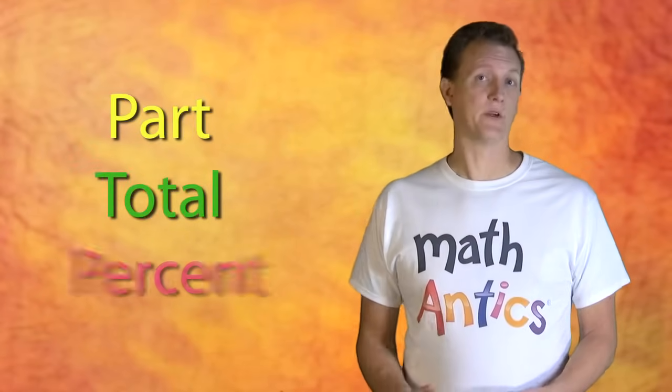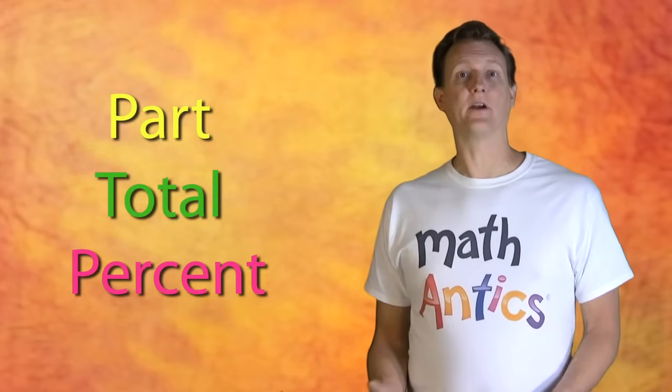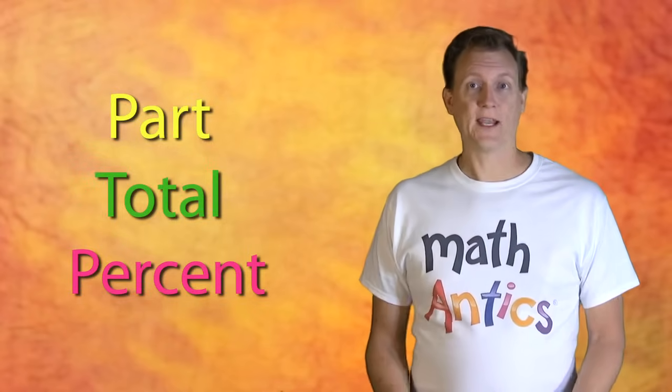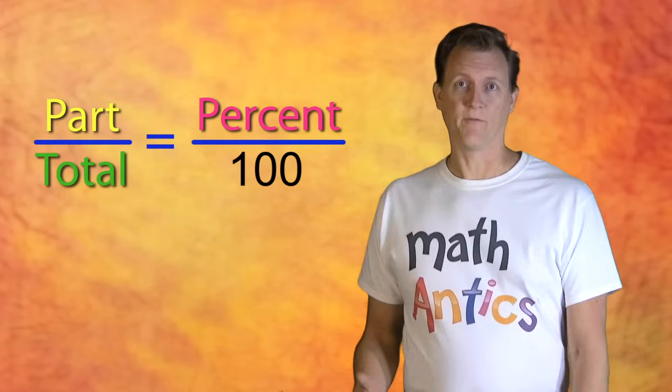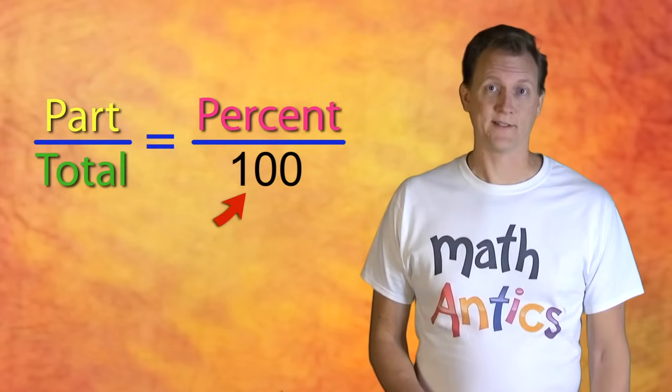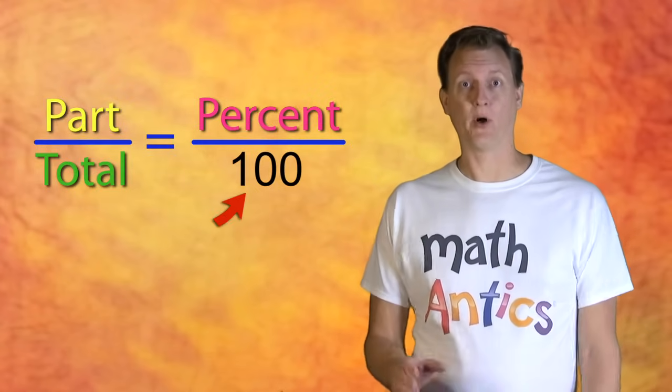In our last lesson about percents, we learned that there are three main types of percent problems because there's three different numbers that could be missing. Those three numbers are the part, the total, and the percent. They're just the three variables in the percentage equation. The fourth number is always 100, since that's what percent means – per 100.